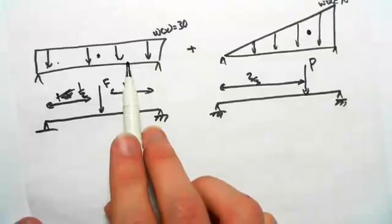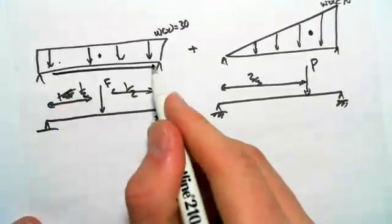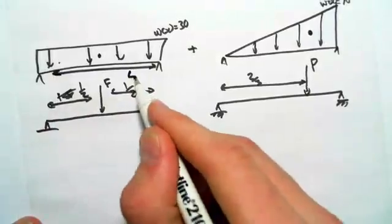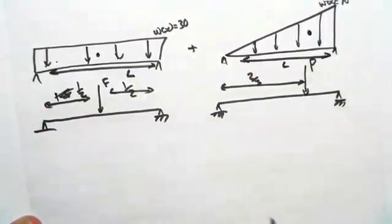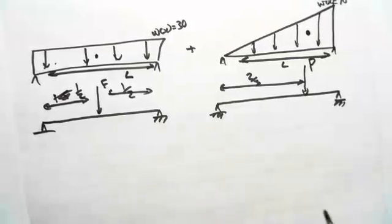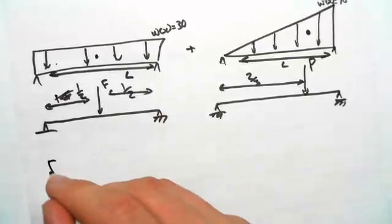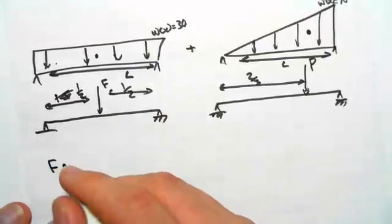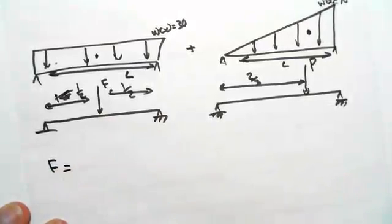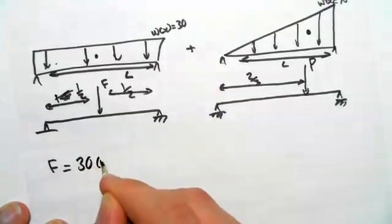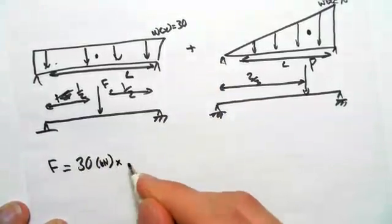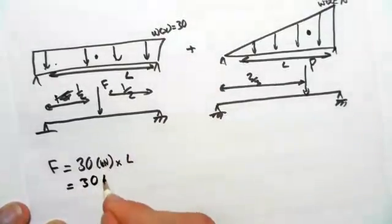So the force of this one, let's give this a value of L. And this is a value of L because they're the same distance. We will get force. This one equals the height, which is 30 kilonewtons times the length. So it equals 30L.